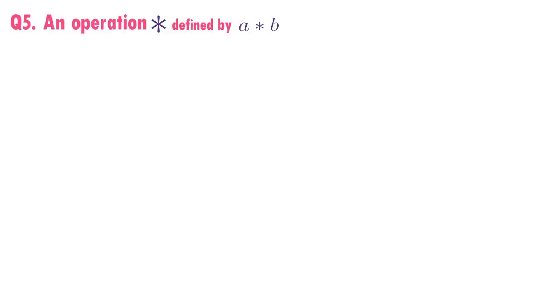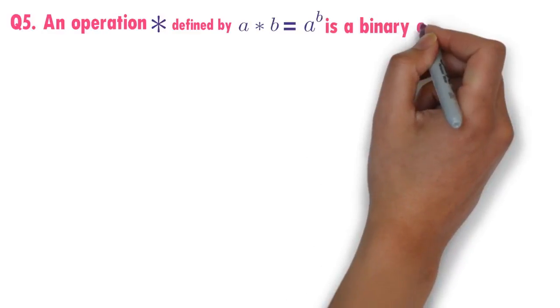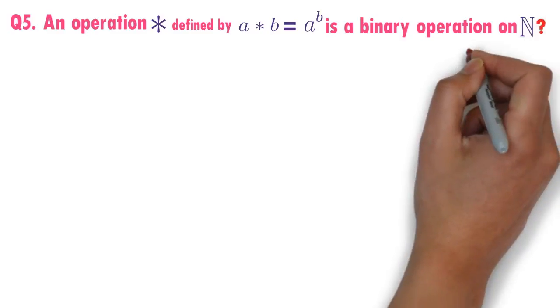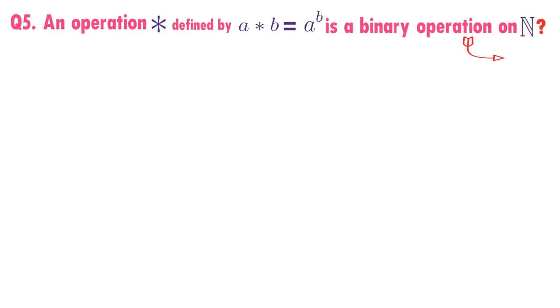An operation star defined by A star B equals A power B. Is a binary operation on set of natural numbers? We will check the same operation star on set of real numbers also.